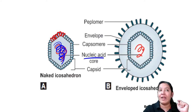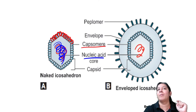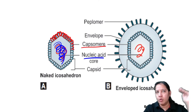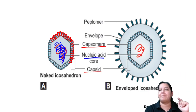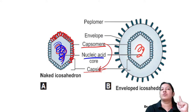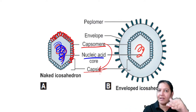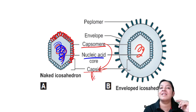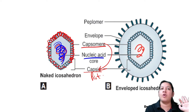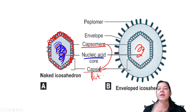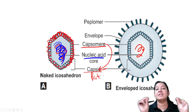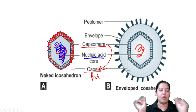Capsid is made up of capsomers. Capsomers are the monomers and capsid is the polymer. Both capsid and capsomers are protein - they form the protein shell. These two things - nucleic acid and capsid - are compulsorily present in all viruses. Some viruses have a third component and some do not - it is not compulsory. This third thing above the capsid is an envelope.